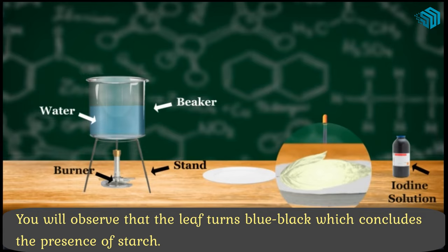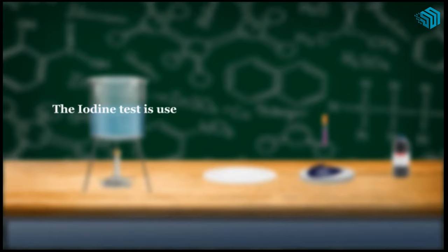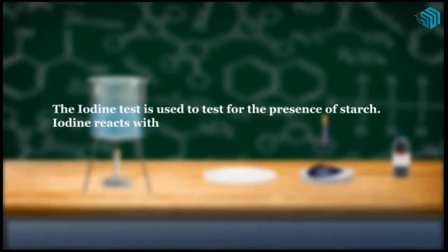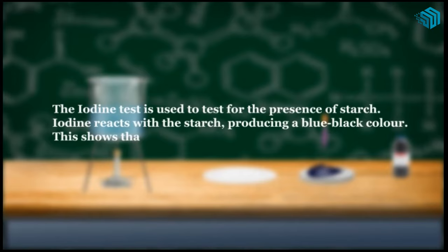The iodine test is used to test the presence of starch. Iodine reacts with the starch producing a blue-black color. This shows that starch is present in the green leaf.